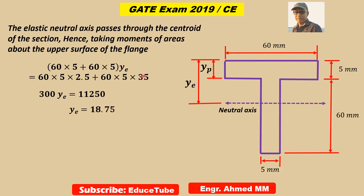Using the calculator, we find 300 Ye equals this result. So Ye equals 18.75. We got the elastic neutral axis distance of 18.75 from the upper surface of the flange.